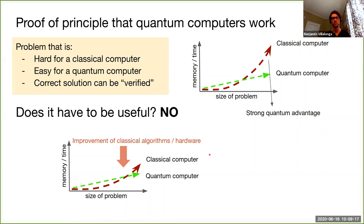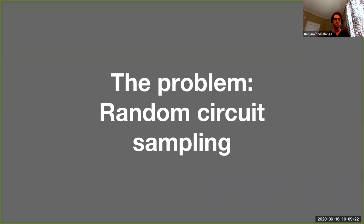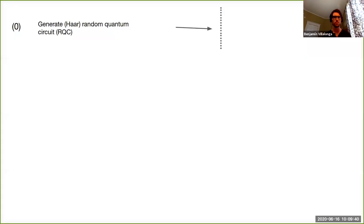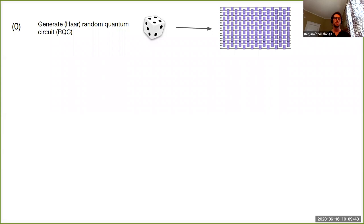The problem the Google quantum team designed to demonstrate strong quantum advantage is called random circuit sampling. First, we generate a random quantum circuit — quantum circuits are instructions the quantum computer runs. By 'random' we mean the Haar measure: a fair measure over the set of unitaries where each quantum circuit is sampled with equal probability.